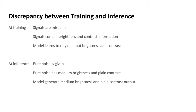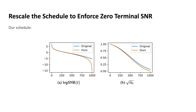At inference time, pure noise is given instead, and pure noise always has a medium brightness and plain contrast, so the model tends to generate samples with medium brightness and plain contrast following its input. Our solution is a method to rescale existing schedules to enforce that the last time step always has pure noise, aka zero SNR. We can apply this rescaling method to any existing schedule, and it will follow the original schedule's shape and intent as much as possible.